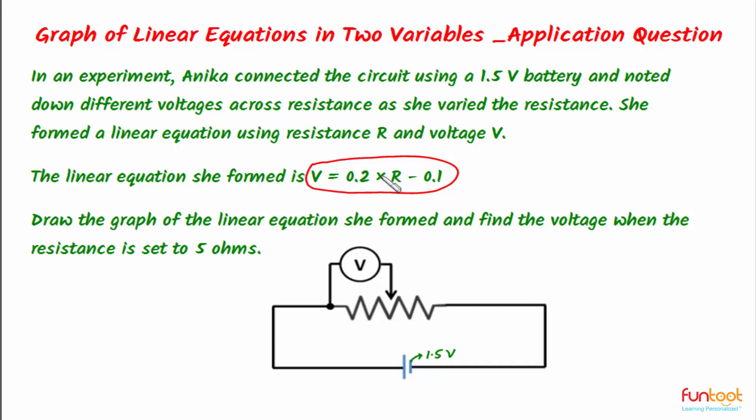Let's discuss the approach for doing this. We have the linear equation here, and using this we'll be able to get the solution pairs. That means for each value of resistance we will get a value of the voltage. Using the solution pairs obtained from this equation, we'll be able to plot the points in the graph sheet and join the points to form the graph of this linear equation.